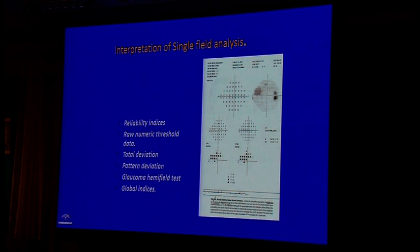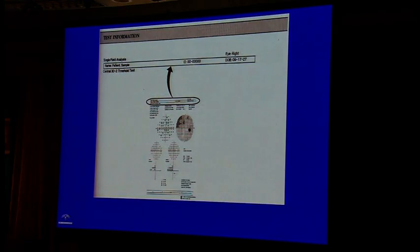When interpreting visual fields, we need to look at certain parameters: the reliability indices, the raw numeric threshold data giving retinal sensitivity at each tested point in decibel units, and the total deviation — we will briefly review what these mean.